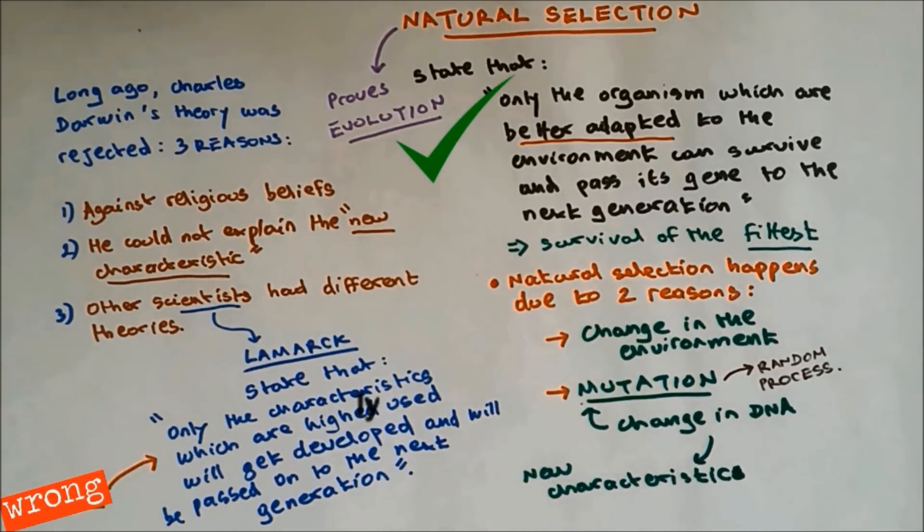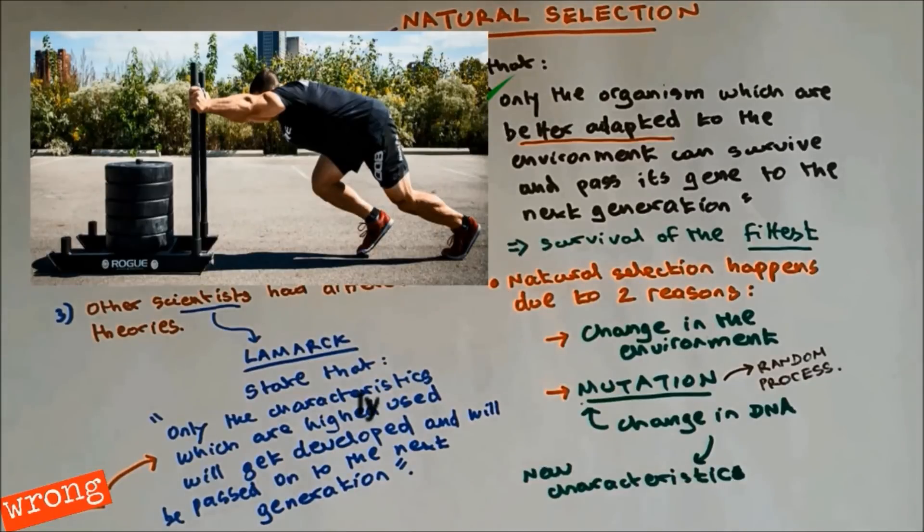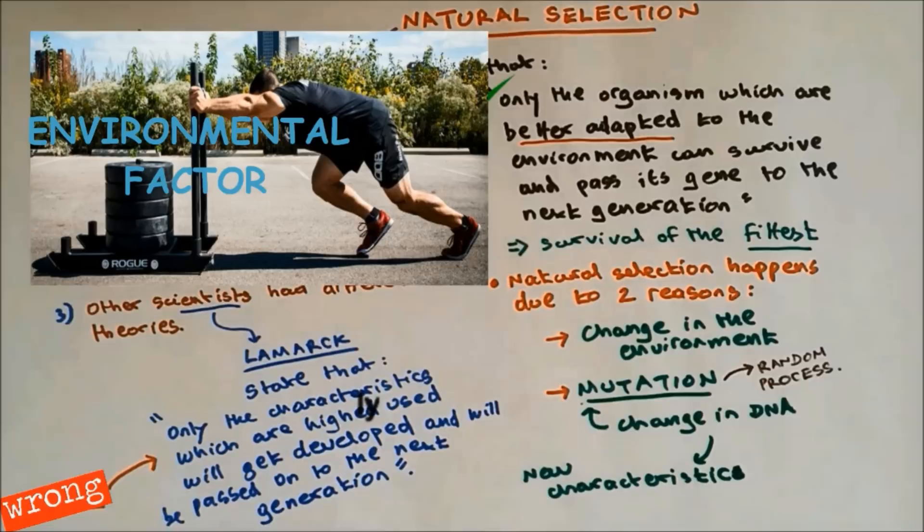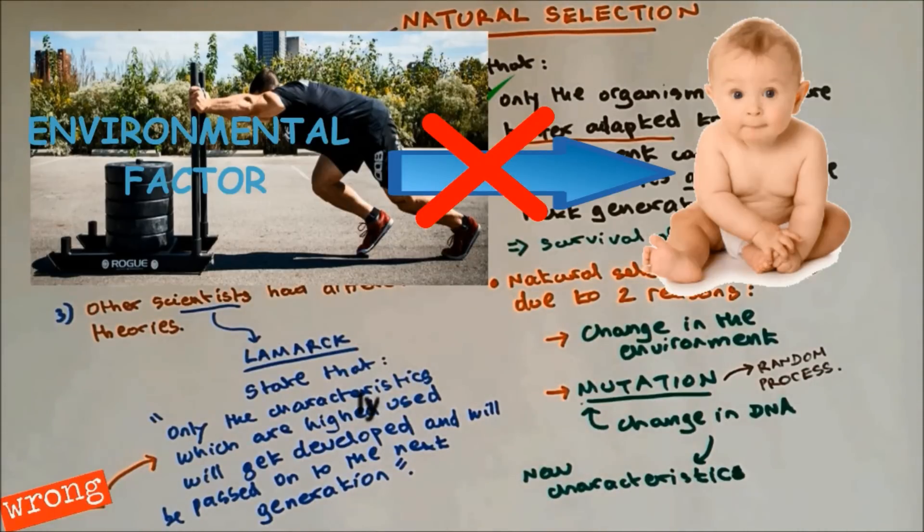Now Lamarck theory cannot happen. And the reason is because a characteristic which was developed through environmental factors cannot be passed on to the next generation. So a boy who is training and developing his body with muscle, such muscle characteristics will not be passed to his child. And the reason is because he developed all this muscle characteristics by training which is environmental factors. And environmental factors will not be passed on to the next generation.